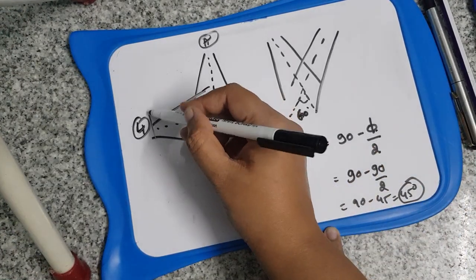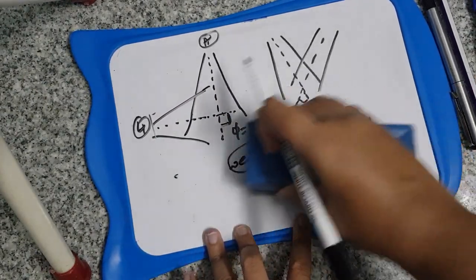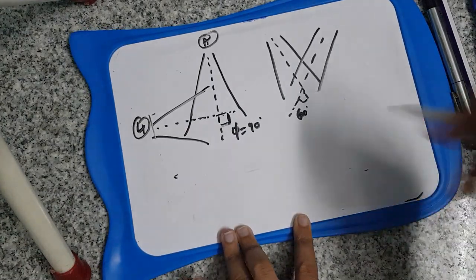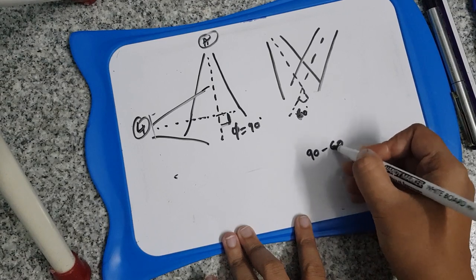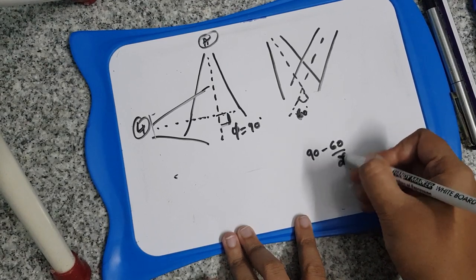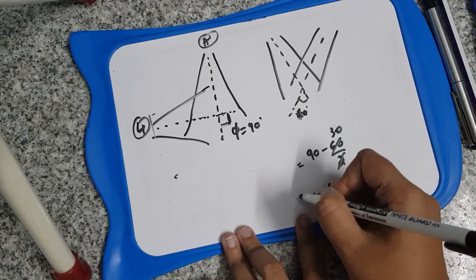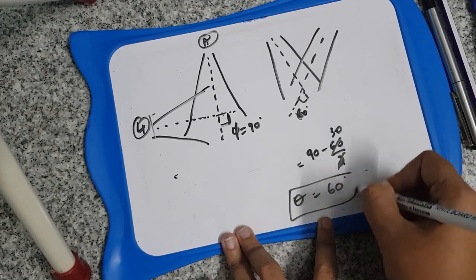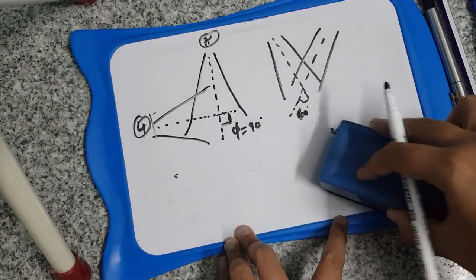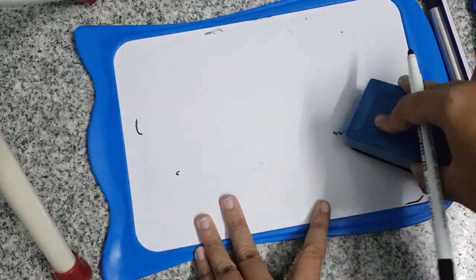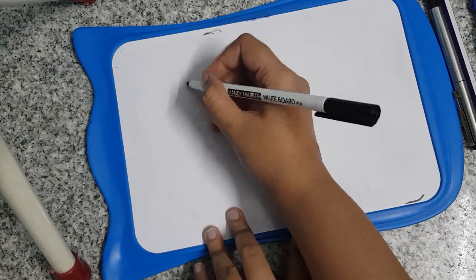Another example: if your hinge angle is 60 degrees, then it is 90 minus 60/2 = 90 minus 30 = 60 degrees. So the wedge angle you need is 60 degrees.